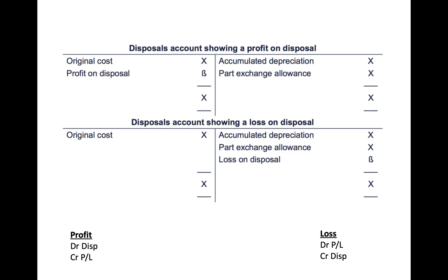The disposals account has a balancing figure that will either be a profit or a loss on disposal. The profit will be on the left because the double entry is debit disposal, credit P&L — any credits in the P&L are considered as income. Loss on disposal is on the right because the double entry is debit P&L, credit disposal — any debits in the P&L are expenses.